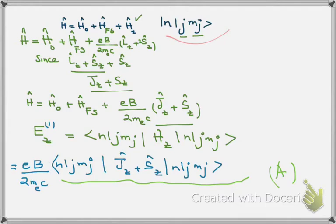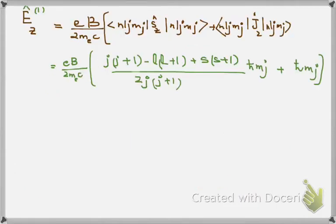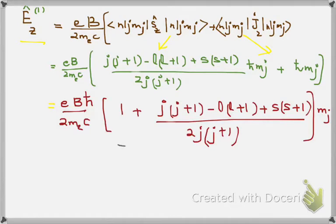Now just put the final result in equation A and you can have, after putting the value of this term, the first order correction due to Zeeman energy, due to weak field, weak magnetic field. This term is called the Landé g-factor, represented as gj.